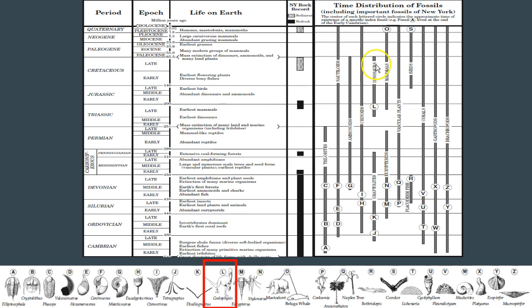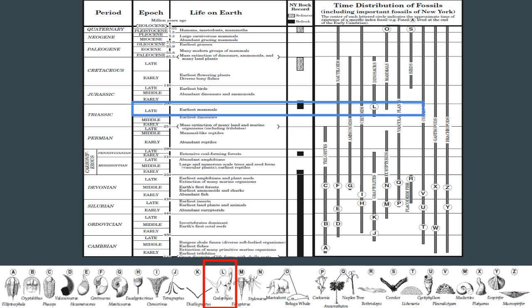But there were other dinosaurs that existed up until the late Cretaceous. If you notice, the bar graph ends here for the dinosaurs. And if you look over here, you have mass extinction of dinosaurs, which is why you don't have any more dinosaurs - they died.